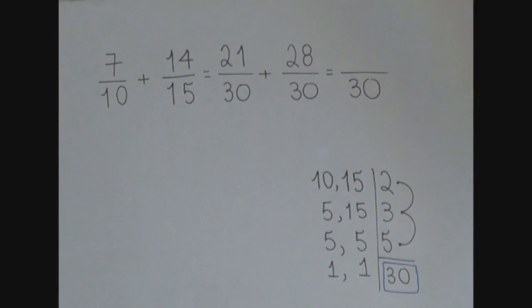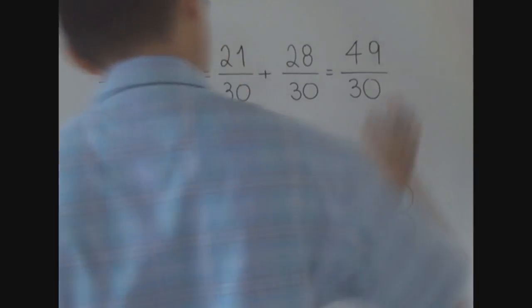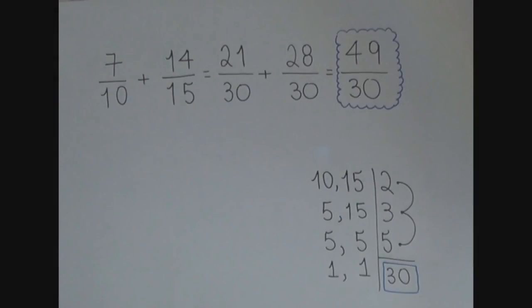And add or subtract, if that's the case, denominators. So, what we do here is add 21 and 28. 21 plus 28 equals 49.